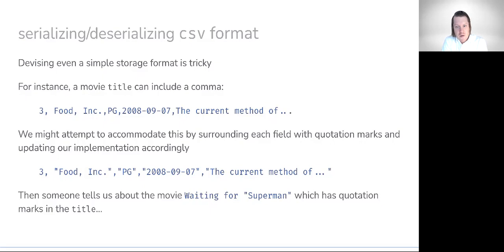We'd obviously have to update our encoding scheme and maybe we attempt to accommodate this by surrounding each field with quotation marks. And going through the motions to actually ensure our implementation addresses this. Well, this is all good until someone tells us about the movie Waiting for Superman, which has quotation marks in the title.